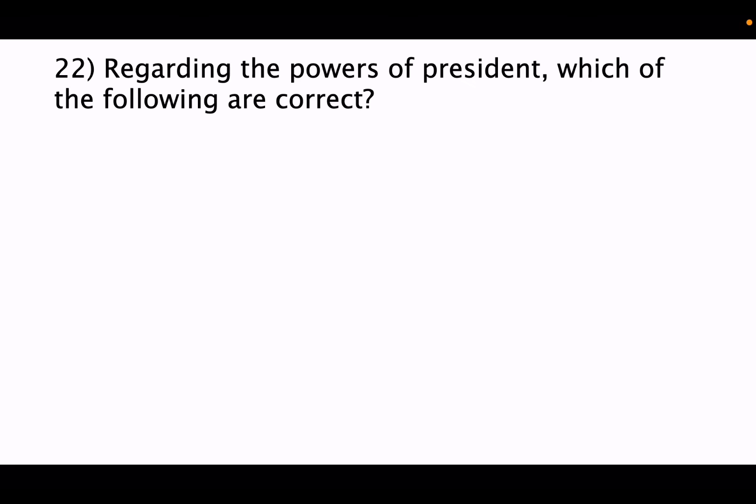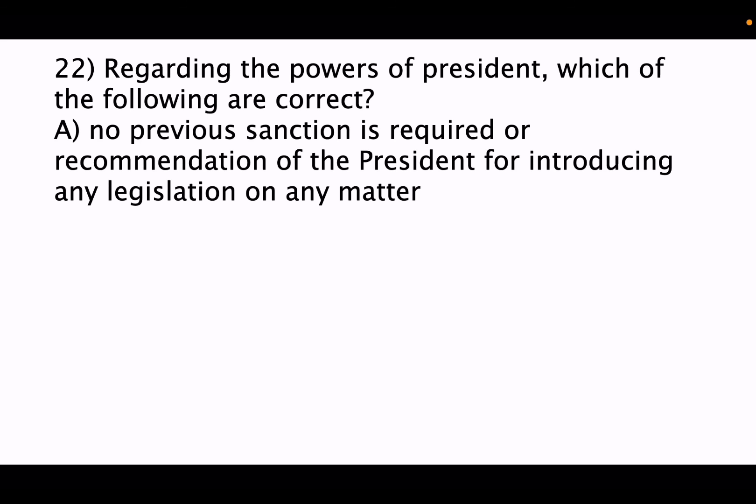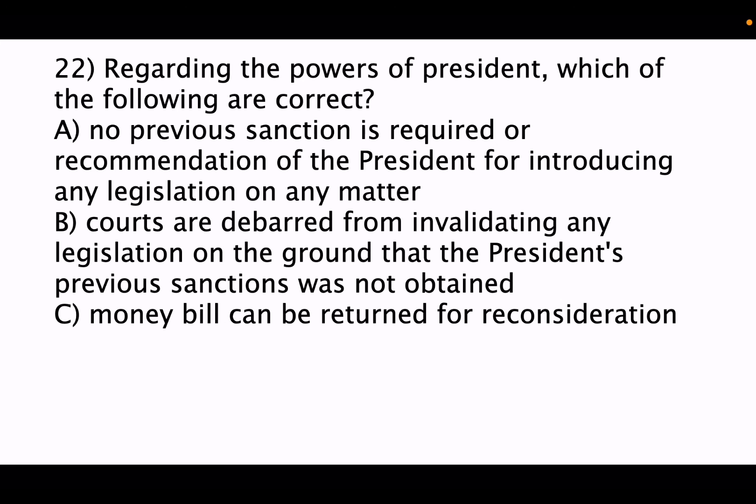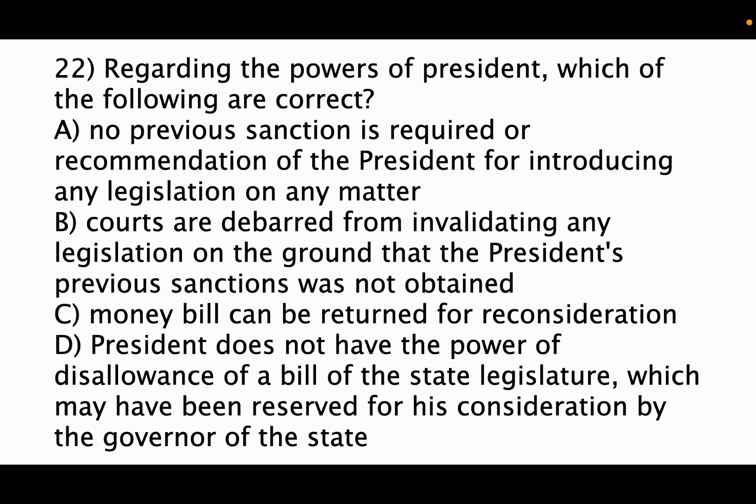Twenty-second question: regarding the powers of the president, which of the following is correct? Option A: no previous sanction or recommendation of the president is required for introducing any legislation on any matter. Option B: courts are debarred from invalidating any legislation on the ground that the president's previous sanction was not obtained. Option C: money bill can be returned for reconsideration. Option D: president does not have the power of disallowance of bills of the state legislature reserved for his consideration by the governor. The correct answer is option B.